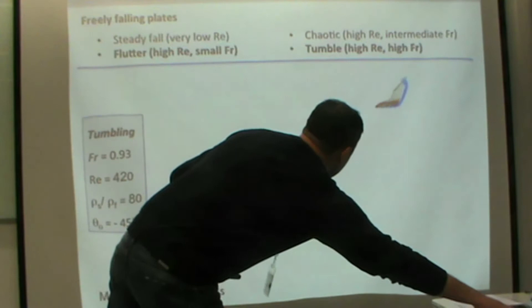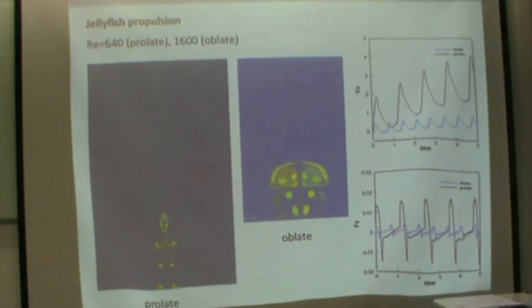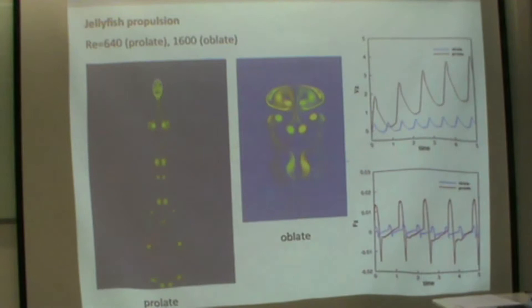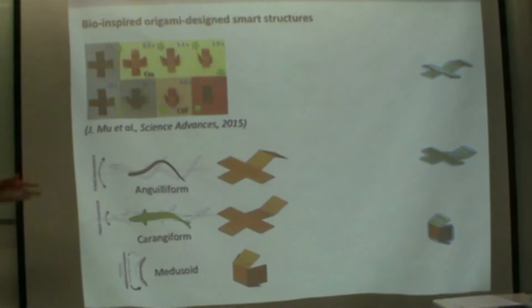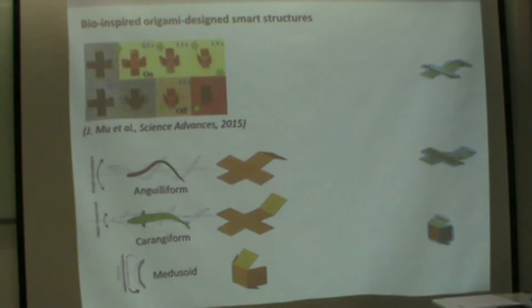We used the same approach to study jellyfish propulsion, like the one here. Given the simplicity of the solver, we're adding springs to mimic muscles, so we have this geometry that shrinks and opens, and we can evaluate the velocity and forces of propulsion in different geometries, like prolate and oblate ellipsoids, or even for more complex structures like these micro robots.